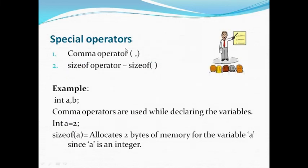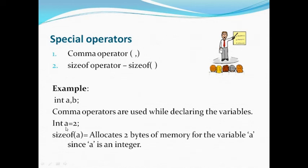Next comes special operators. There are two special operators: the comma operator and the sizeof operator. An example of the comma operator is when declaring variables — we declare as int a, b. The comma operator is used while declaring variables. For the sizeof operator, if a is of data type integer and is assigned a value 2, then sizeof(a) will return the value 2, meaning it allocates 2 bytes of memory for the variable a. If a is of data type float, then 4 bytes of memory will be allocated.